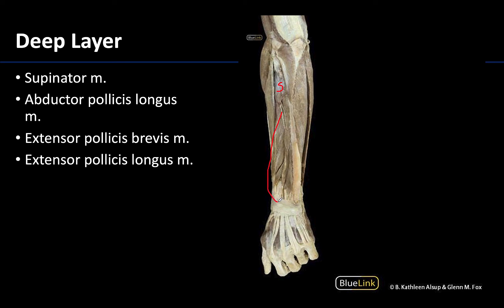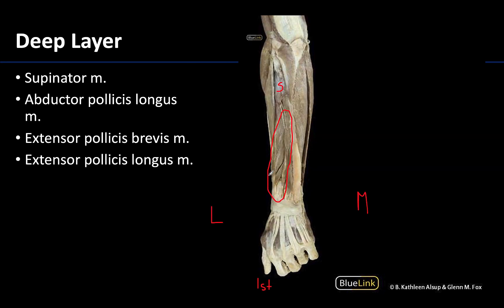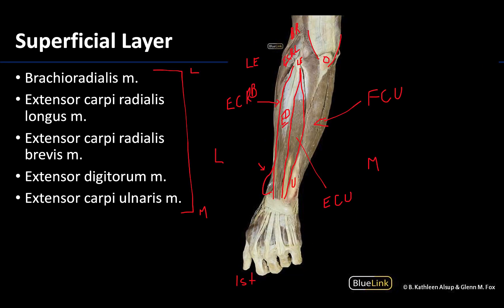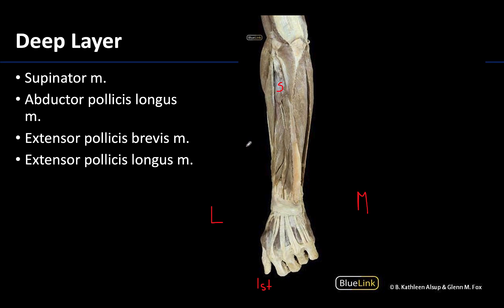These muscles are all heading towards the first digit. Here's the first digit, so this is lateral and this is medial. All these muscles in this general region of the deep layer are heading for the thumb, and some of them will actually pop out and are visible superficially — these are often called the outcropping muscles. The most superior of these outcropping muscles is the abductor pollicis longus.